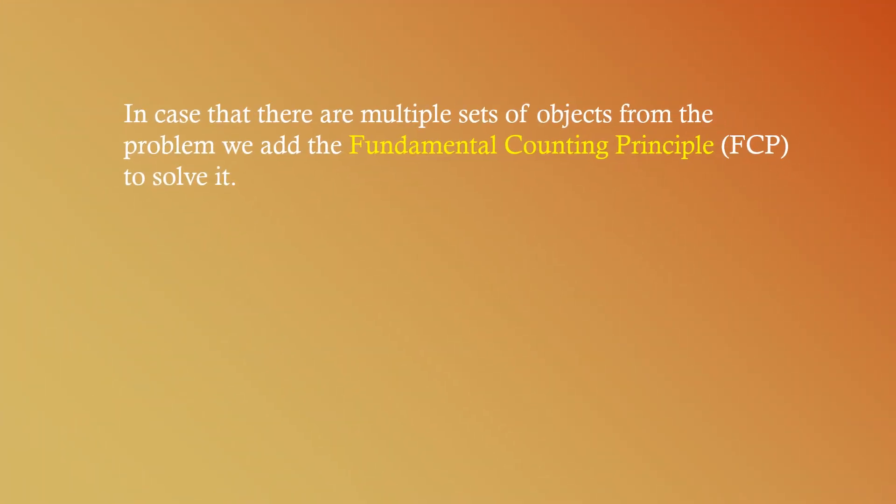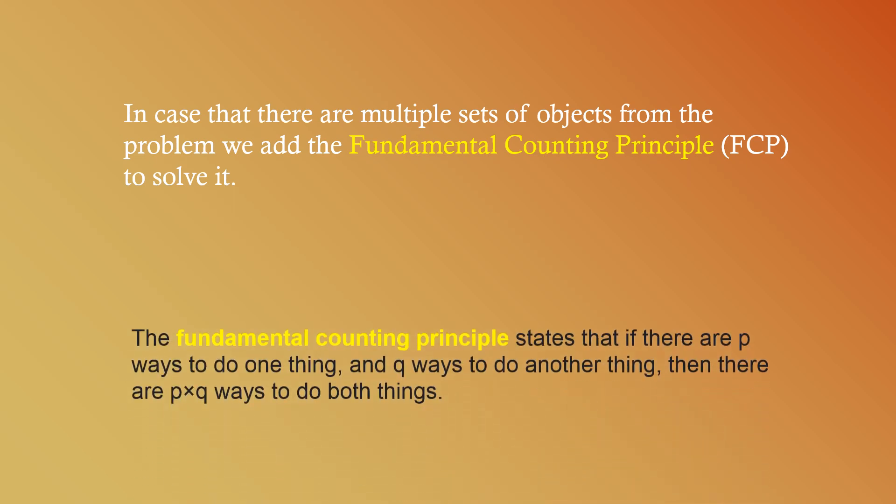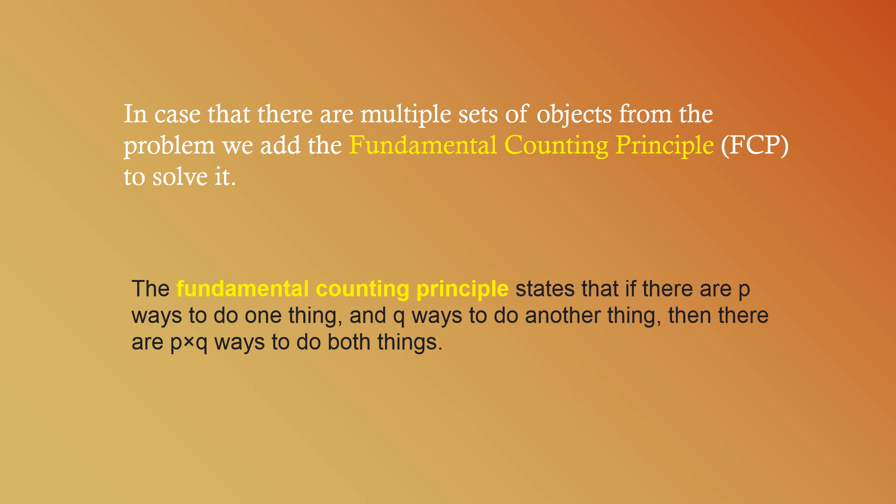Now, in cases where there are multiple sets of objects in a problem, we add the Fundamental Counting Principle to solve it. The Fundamental Counting Principle, or FCP, states that if there are P ways to do one thing and Q ways to do another thing, then there are P times Q ways to do both things. Let's look at an example.